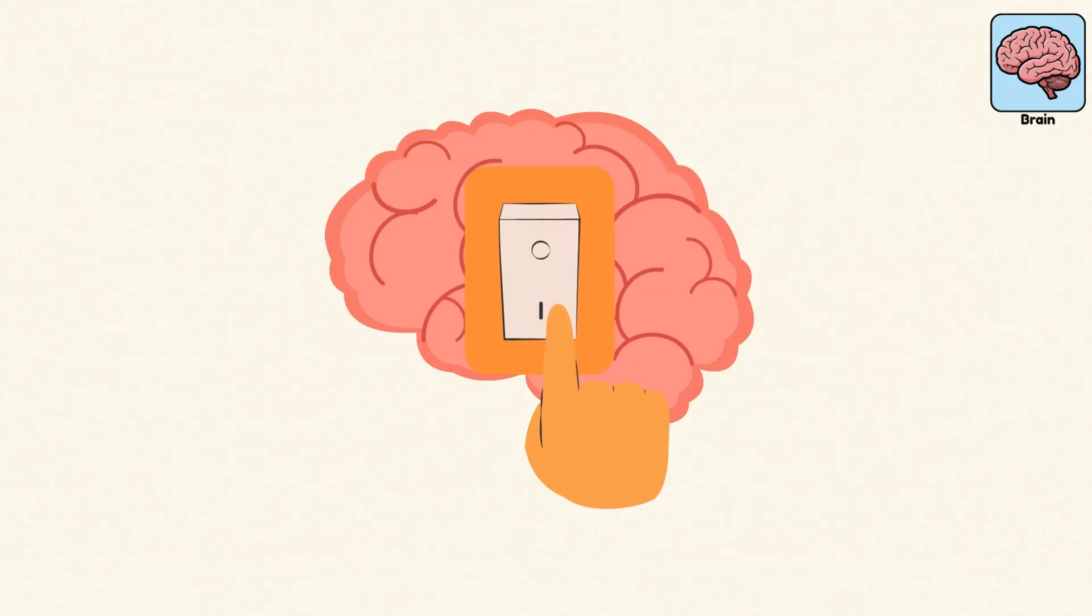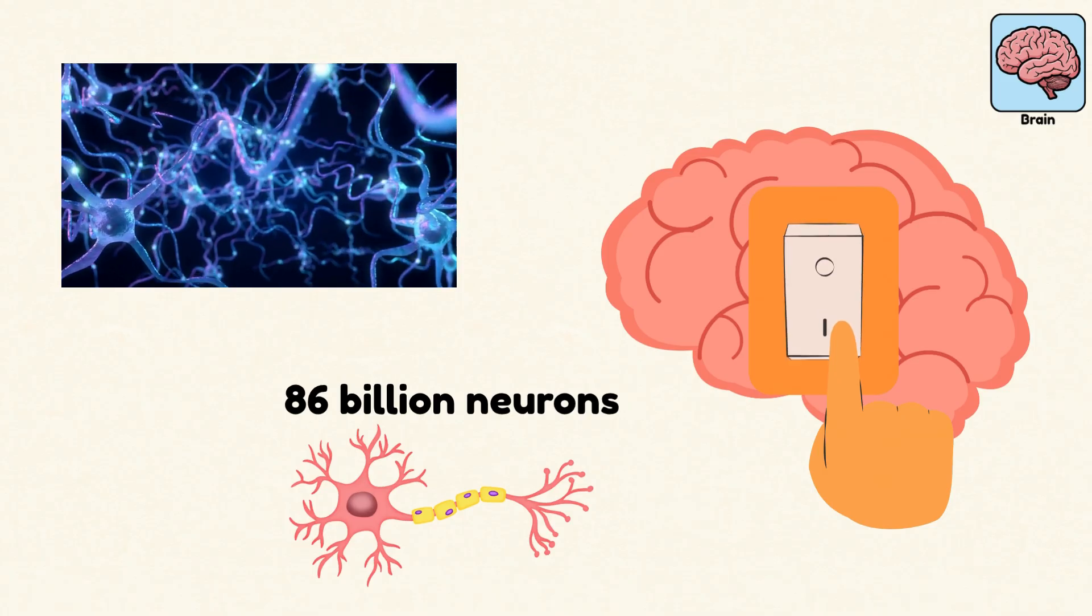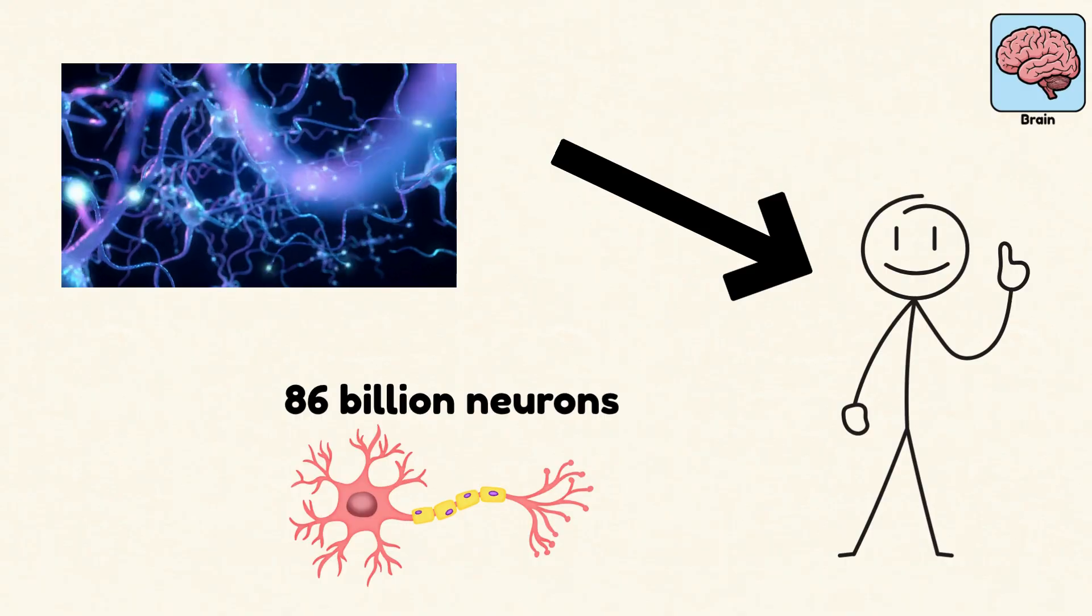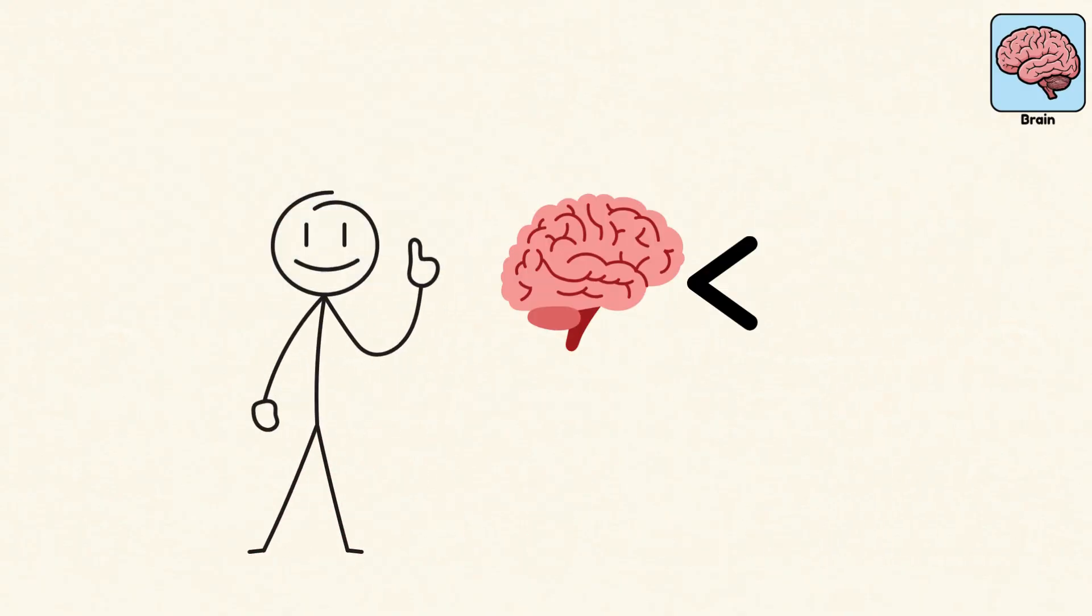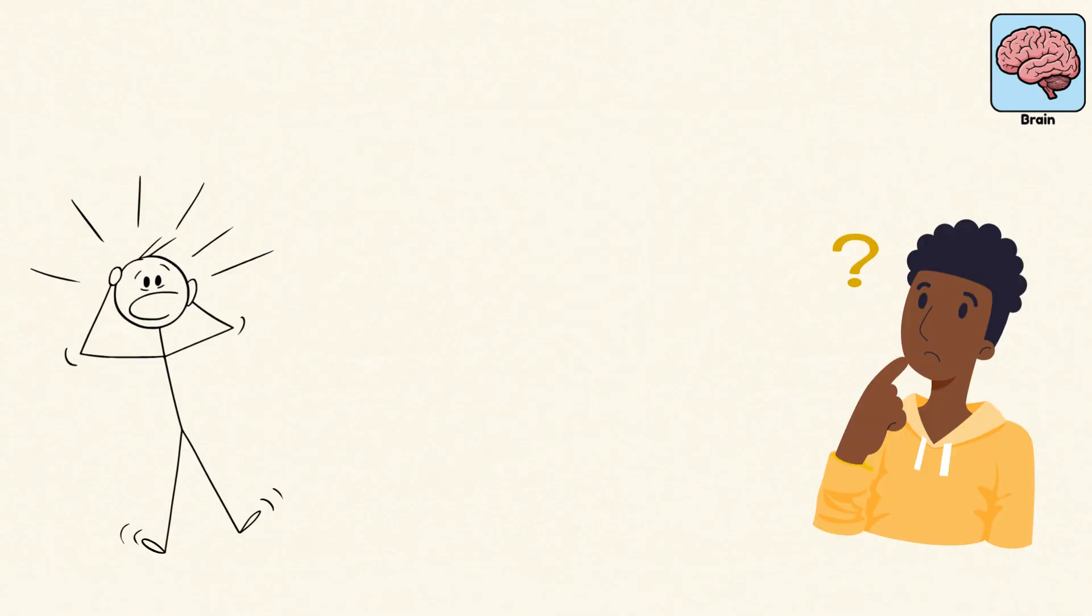Imagine a billion switches flipping on and off in perfect sequence. That's your brain firing electrical signals across 86 billion neurons to run your entire body. Even though it weighs less than 5% of your body, it demands 25% of your energy. Because thinking, reacting, and staying alive is hard work.